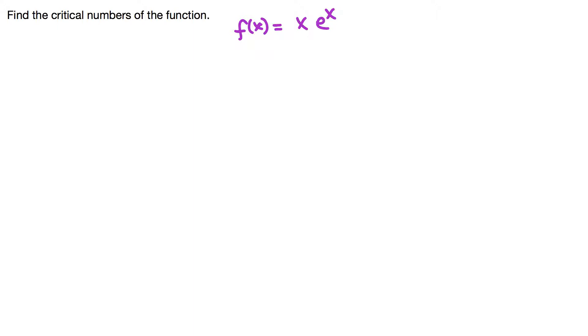To find the critical numbers, first look at the domain of this function. The domain of x times e to the x: exponential function is defined everywhere, and so is x. So all real numbers, negative infinity through infinity. So our critical numbers, if there are any, can be anywhere in this number line.